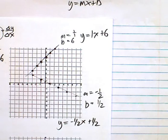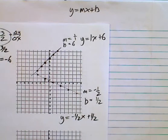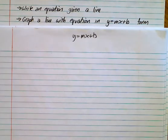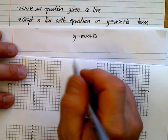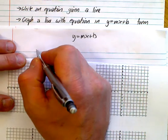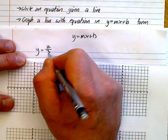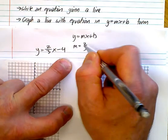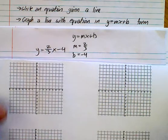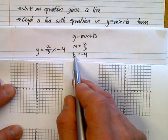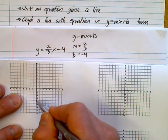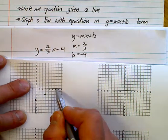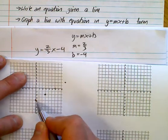That's how we find the equation of a line given that actual line. Now let's graph a line with the equation in that form. If I gave you y equals 2 thirds x minus 4 — identify your m, which is 2 thirds, and your b, which is negative 4. So I go down 1, 2, 3, 4 — there's my y-intercept. With a slope of 2 thirds, I go up 2 over 3, up 2 over 3, up 2 over 3. We can also go down 2, back 3.